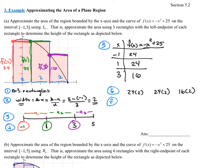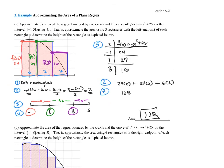Step 7 says to take all of those areas and add them together. So I do 24 times 2 plus 24 times 2 plus 16 times 2, and I get an answer of 128. This is an area — in an xy plane we technically don't have units, but if this were inches, for instance, we would say 128 square inches. We've estimated the area beneath the curve of negative x squared plus 25 using three rectangles with the left endpoint, and we got 128 square units.